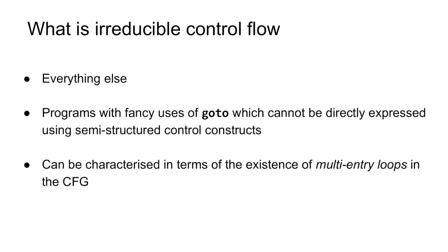Having defined reducible control flow, irreducible control flow is pithily every other kind of control flow graph. A concrete example would be a program with a fancy use of go-to, such as jumping into the middle of a loop, which cannot directly be expressed in terms of semi-structured control flow constructs. We can characterize irreducible control flow in terms of the existence of at least one multi-entry loop in the control flow graph.